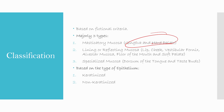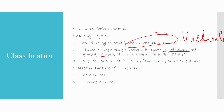Lining or reflecting mucosa is present on the lip, cheek, vestibular fornix — the vestibules, if you have studied the landmarks in your dental materials class. These include the lingual vestibule, labial vestibule, alveolingual sulcus, alveolar mucosa, floor of the mouth, and soft palate.